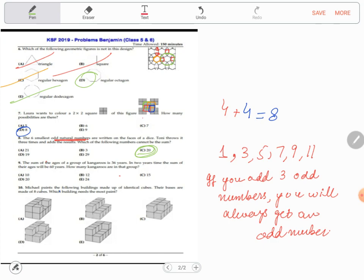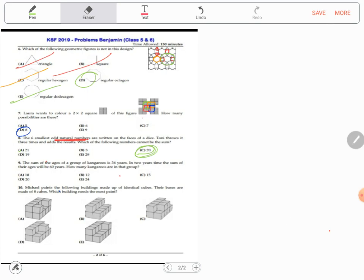Okay, whatever. Question number nine: the sum of the ages of a group of kangaroos is 36 years. In two years time, the sum of their ages will be 60 years. How many kangaroos are in that group? That's an interesting question. We have to look at the ages. We have to look at the number which divides this 36 exactly. That's 12. We have to work for 12. 36 divided by 12.